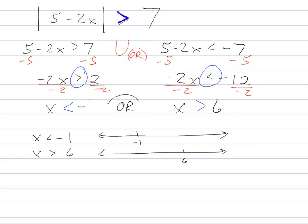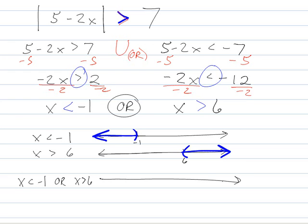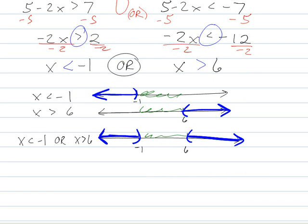So we've got x is less than negative 1 and x is greater than 6. Since it's an 'or,' we just need to meet one guy's requirements. We can go anywhere to the left of negative 1 or anywhere to the right of 6 — just don't touch the middle because nobody's in the middle. So in interval notation: negative infinity to negative 1, or 6 to infinity. And we're done!